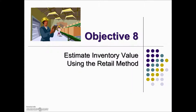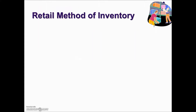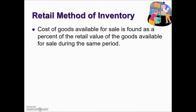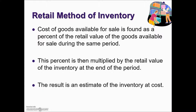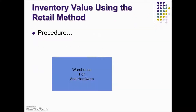Estimate inventory value using the retail method. An estimate of the value of inventory may be found using the retail method of estimating inventory. With this method, cost of goods available for sale is found as a percentage of the retail value of the goods available for sale during the same period. This percentage is then multiplied by the retail value of the inventory at the end of the period. The result is an estimate of the inventory at cost.